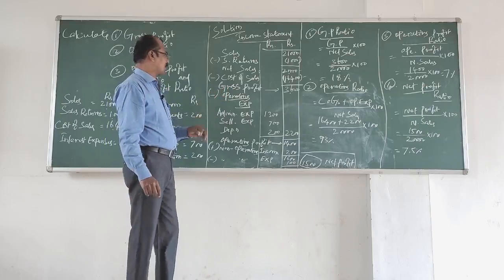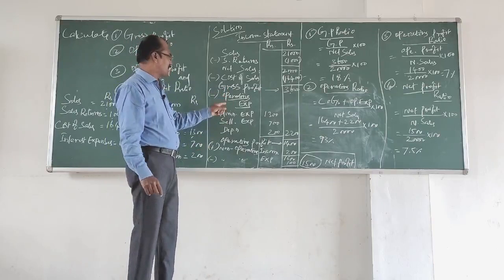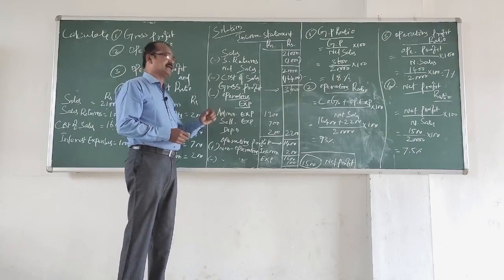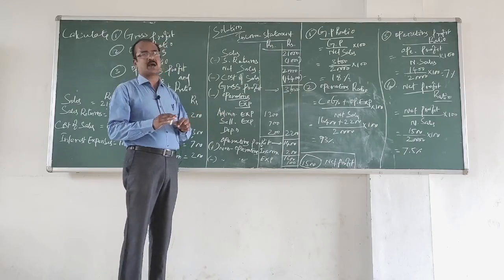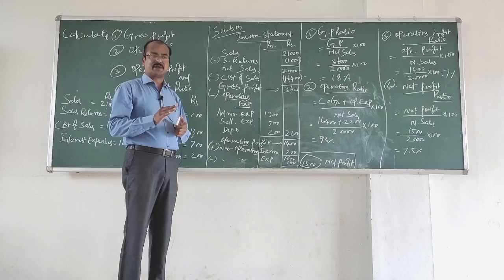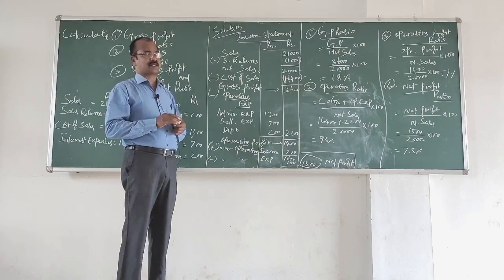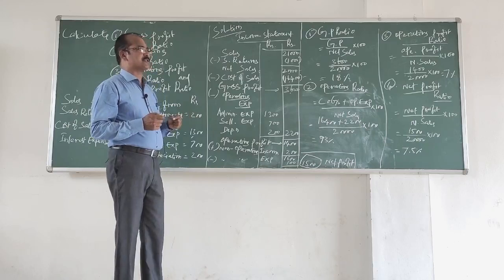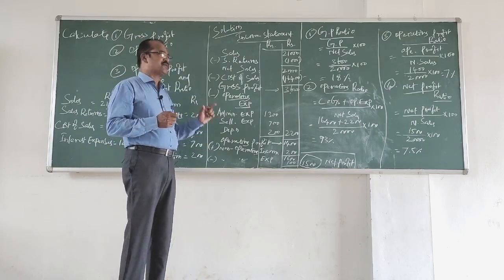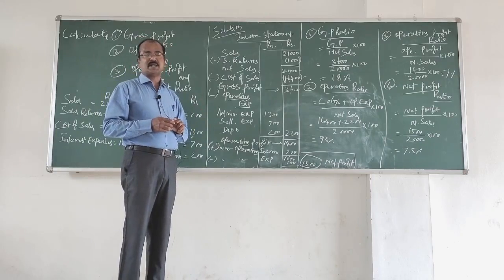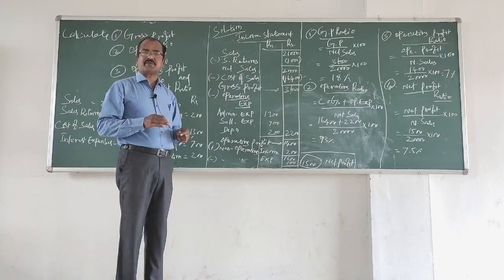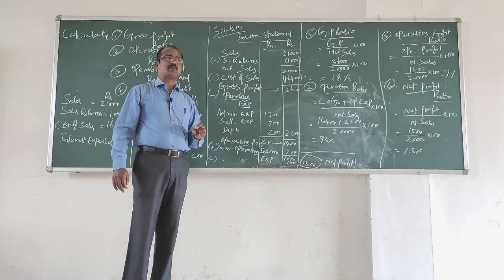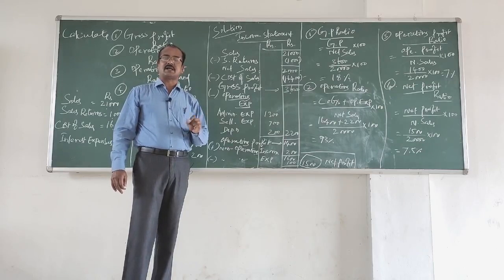From gross profit, we subtract the operating expenses. Expenses can be categorized into operating and non-operating. These are the indirect expenses in the profit and loss account. We pick up the operating expenses and subtract them from gross profit so that we can calculate the operating profit — the profit earned by the concern through the main operations of the business.